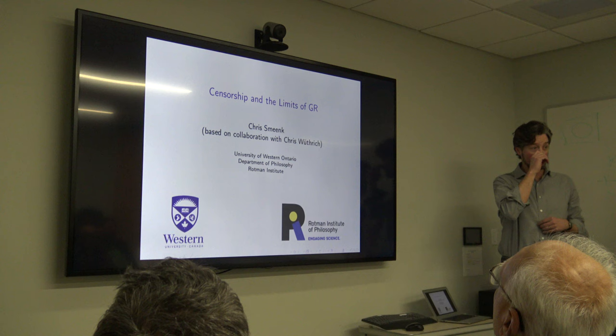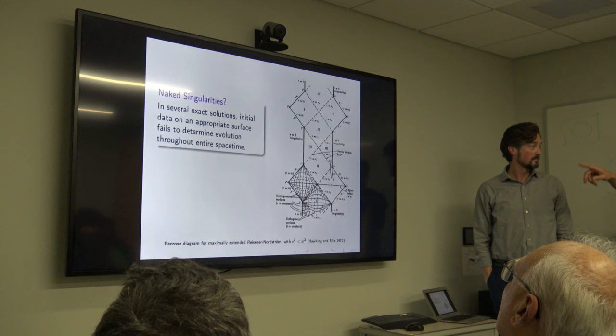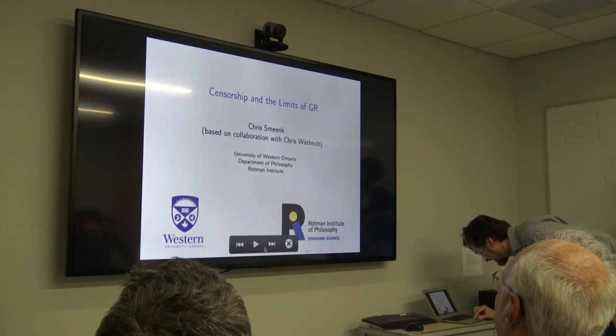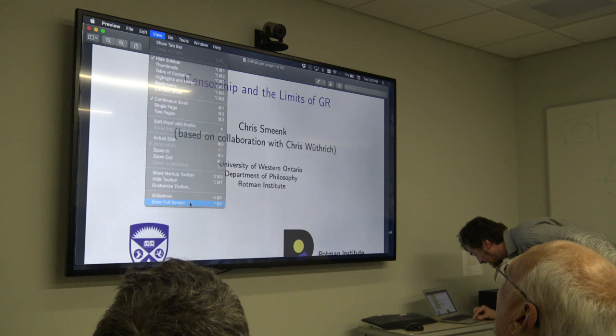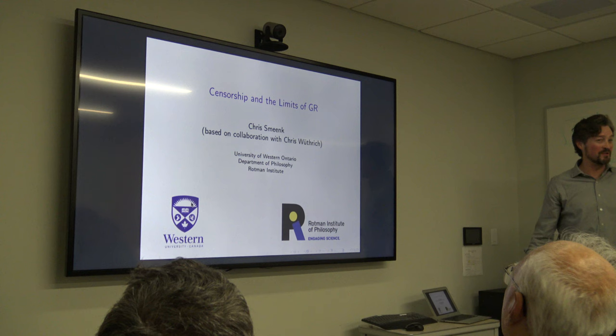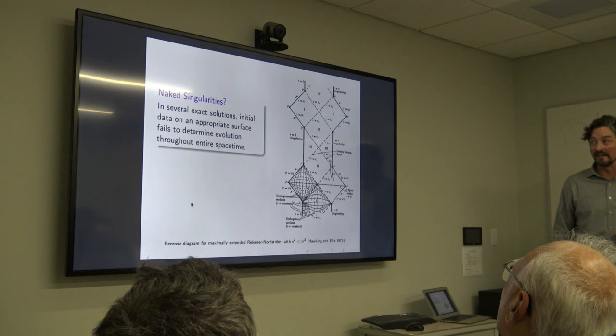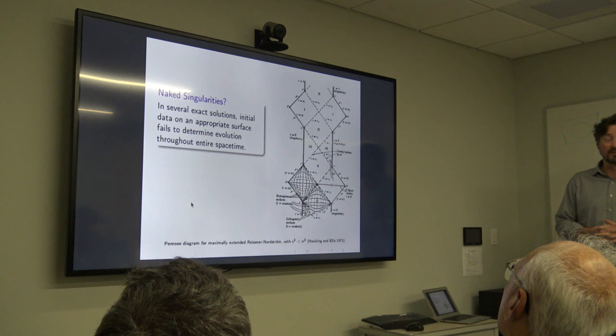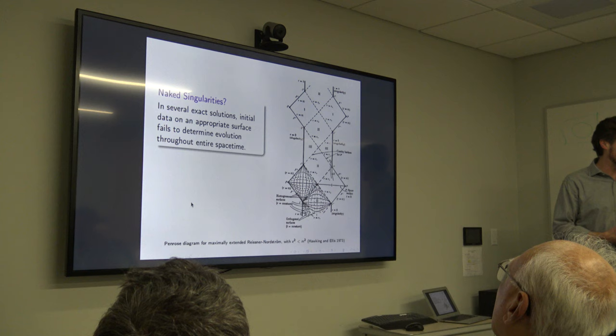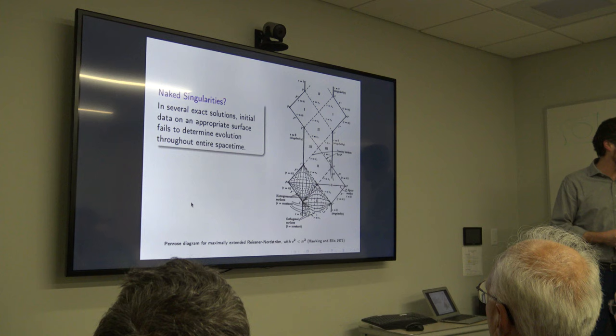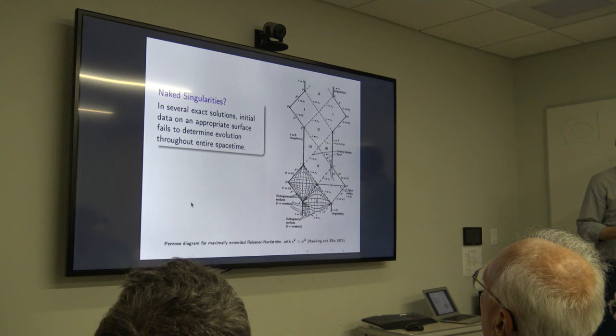We're lucky to have Chris Meek from the University of Western Ontario, who has been talking about strong censorship and the limits of GR. So now for something entirely different: I'm a philosopher and I'll be approaching these questions from a different perspective than a lot of the mathematical physics work that has been going on recently on censorship. I thought it would be interesting for you to hear how philosophers have approached questions of determinism and censorship. I think we have a lot to learn because there's been enormous progress recently in discussions of strong cosmic censorship in particular.